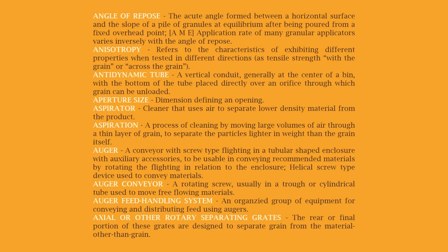Anisotropy: refers to the characteristics of exhibiting different properties when tested in different directions, as tensile strength with the grain or across the grain. Antidynamic tube: a vertical conduit, generally at the center of a bin, with the bottom of the tube placed directly over an orifice through which grain can be unloaded.